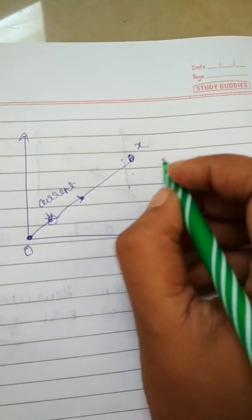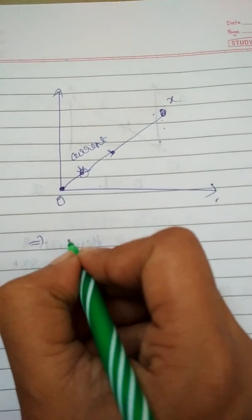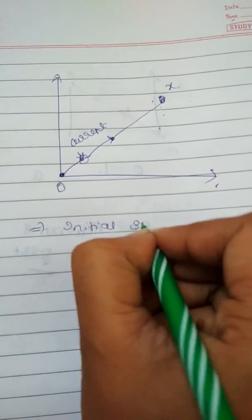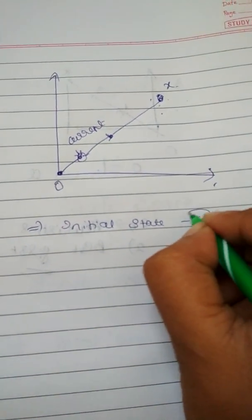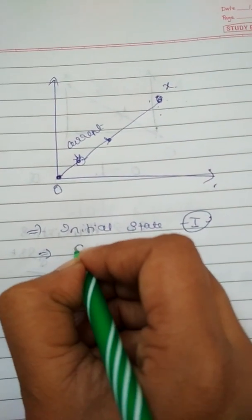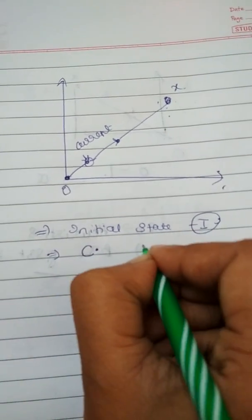This is the algorithm for hill climbing. First you will have an initial state of I. He will evaluate the state of I and he will keep the step C, which is a current state. He will compare this state with the goal state.